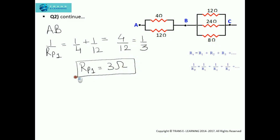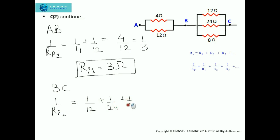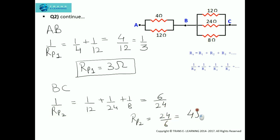Now we need to calculate the equivalent resistance across BC — let it be RP2. So this will be 1/12 plus 1/24 plus 1/8, which comes out to 6/24. Taking the reciprocal, we get 24/6, which equals 4 ohm.